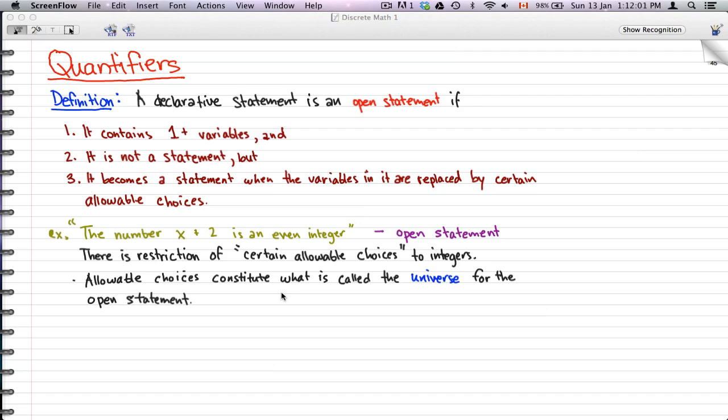Now these allowable choices, these restrictions, constitute what is called the universe for the open statement. If we said that this letter is a part of this many letters, then those letters are what makes up the universe.